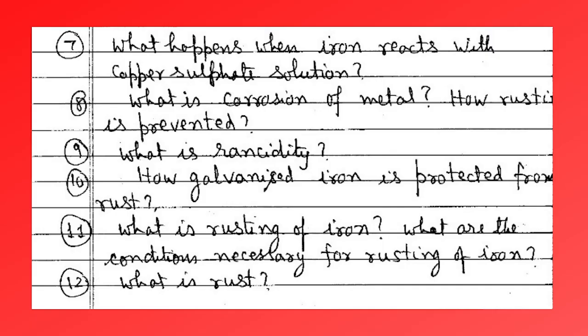What happens when iron reacts with copper sulfate solution? What is the corrosion of a metal? How is rusting prevented? What is acidity? How is galvanized iron protected from rust? What is rusting of iron, and what are the conditions necessary for rusting of iron?